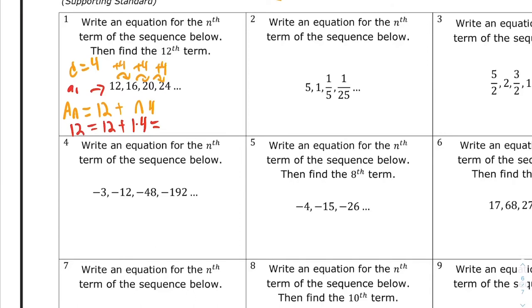And if we do 12 plus 4, that gives us 16, which is not the actual answer. So that's how we would know n is not good. We need to put n minus 1 for the formula for the nth term.